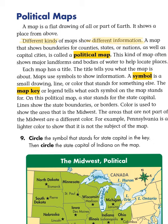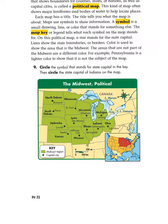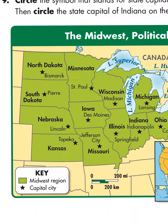One type of map is called a political map. A map that shows boundaries for counties, states, or nations, as well as capital cities, is called a political map. This kind of map often shows major landforms and bodies of water to help locate places. But with a political map, it's more about where people have decided where things are and where things aren't.